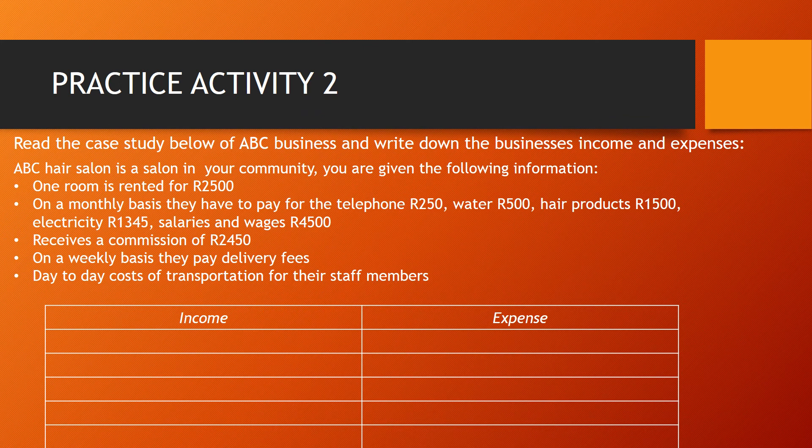To see if you really understood the concepts of income and expenses, there is Practice Activity Number 2. A quick recap before we start: income is the money that comes into the business, and expenses are the costs of the business. The instruction is: read the case study below of ABC Business and write down the business's income and expenses.